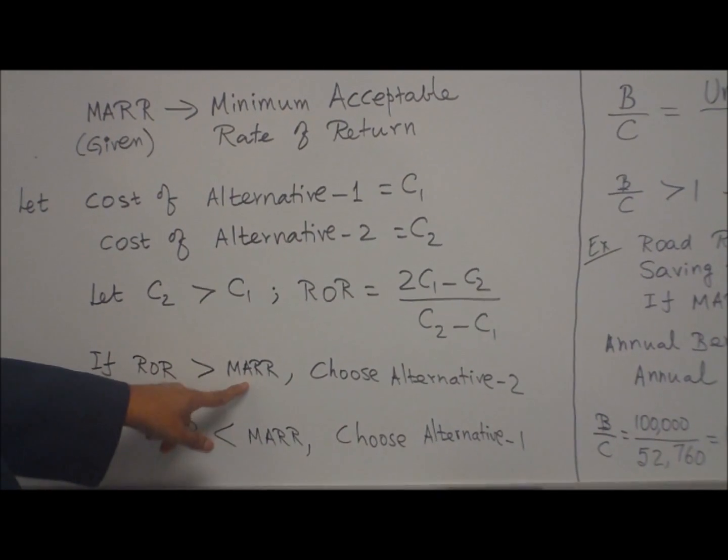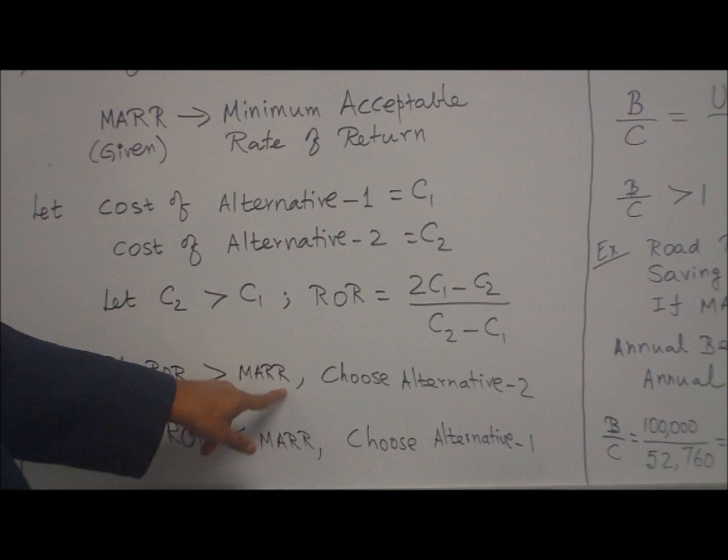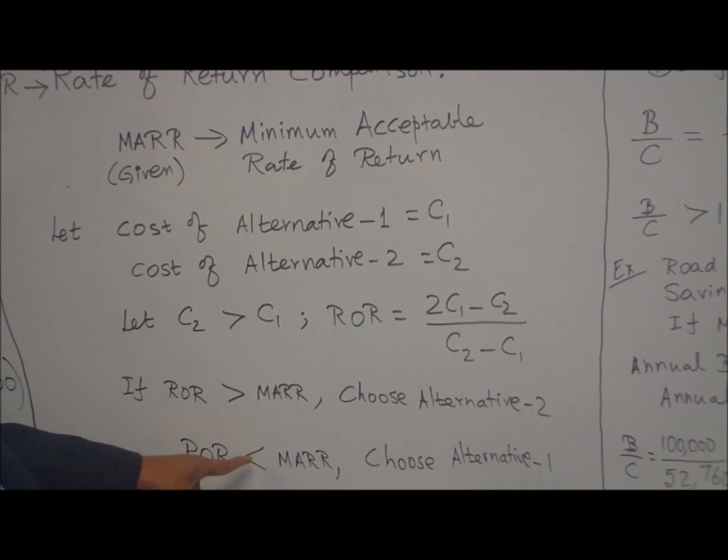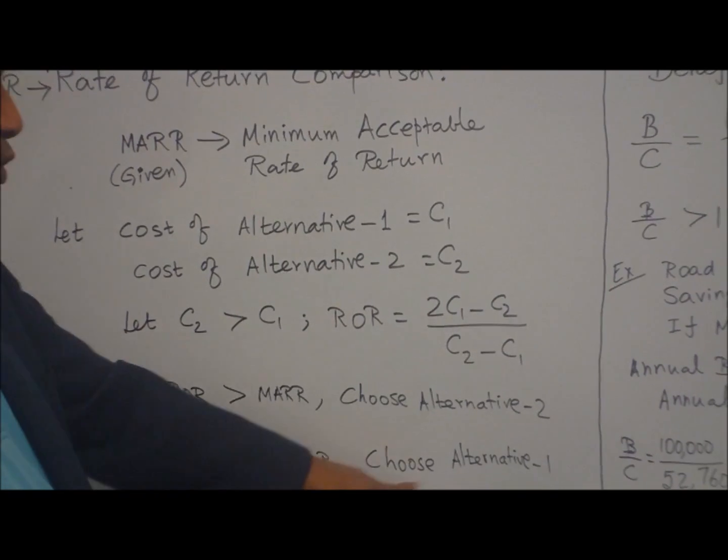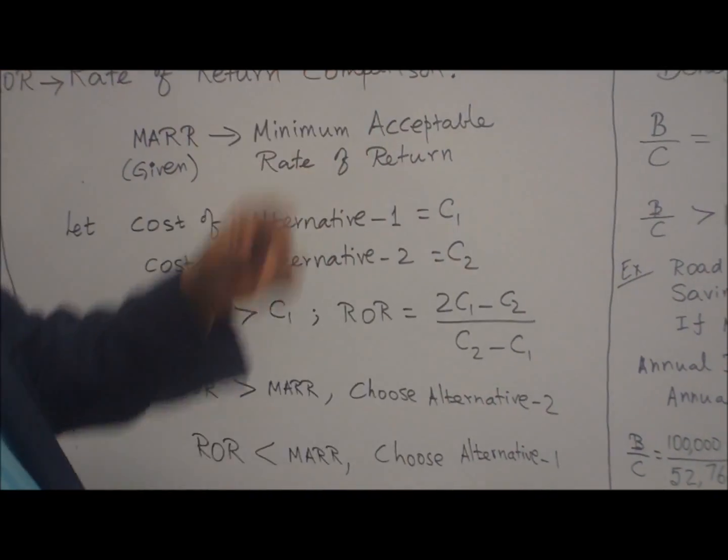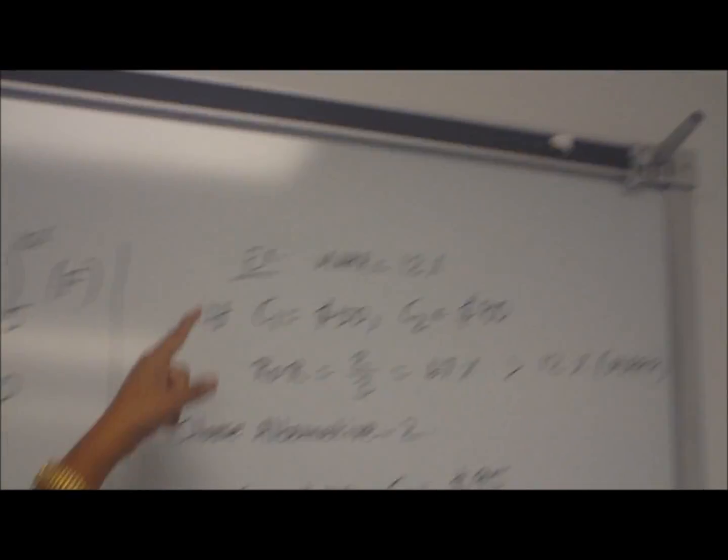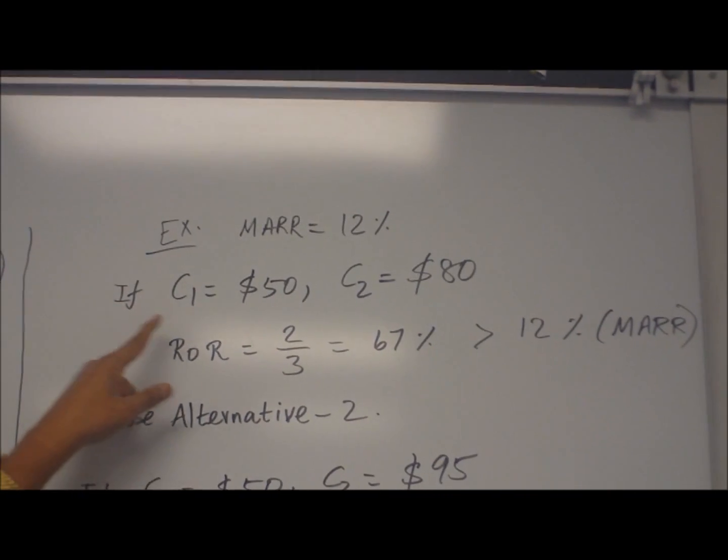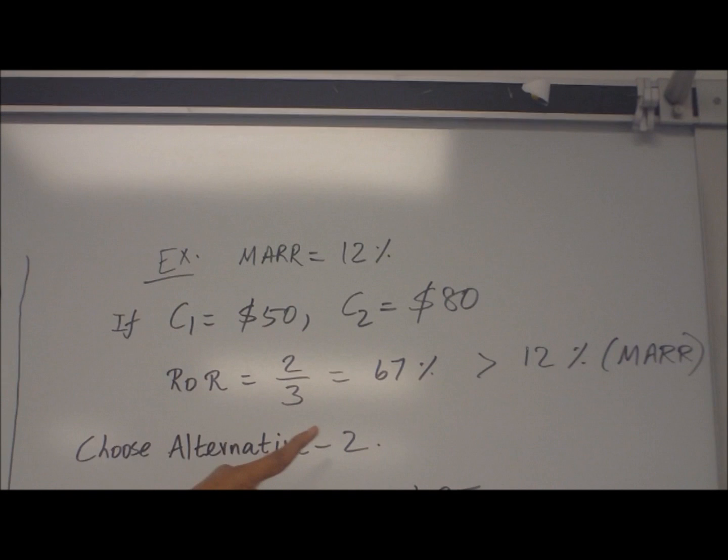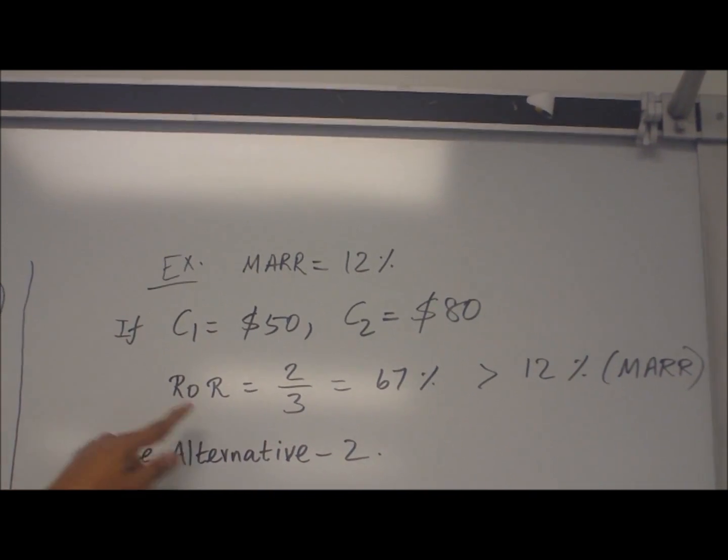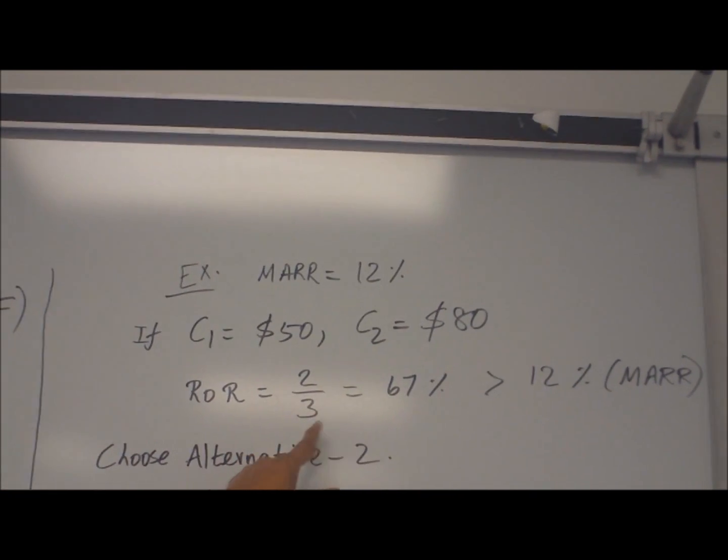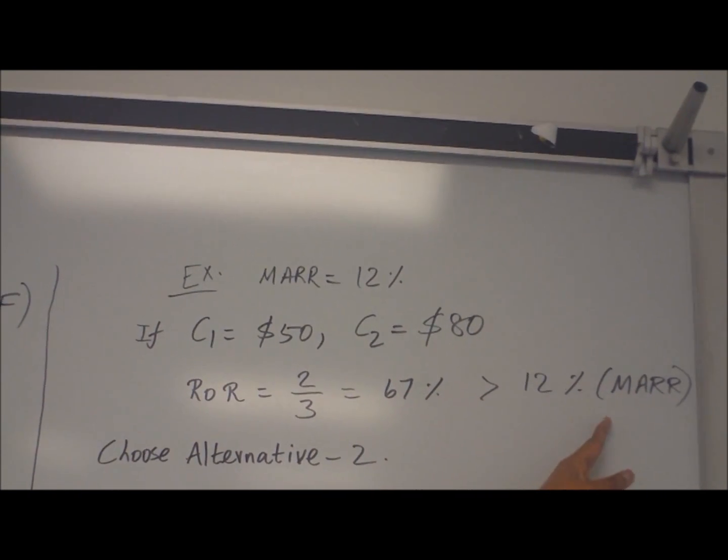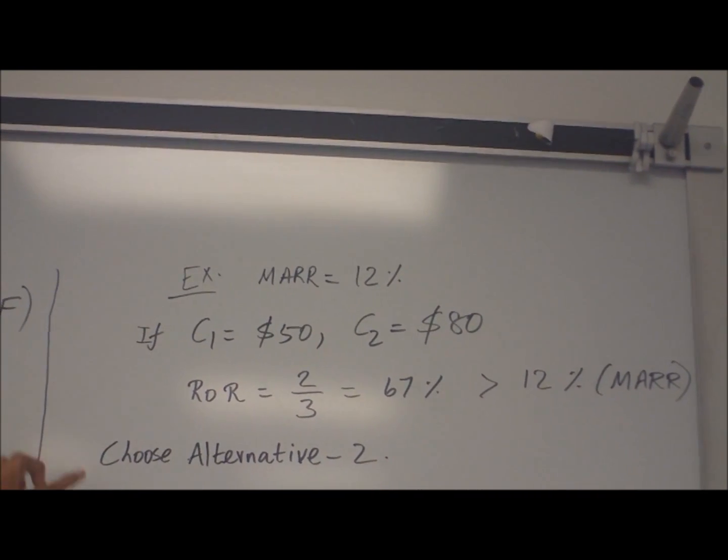If this rate of return, the calculated one, is greater than the minimum acceptable rate of return which is given, then choose alternative 2. If it is less than MARR, choose alternative 1. Let us see an example. If MARR is given by 12% in the problem, if C1 equals 50, C2 equals 80, then you can use that formula, find rate of return 2/3, which is 67%, which is greater than the 12% MARR. So choose alternative 2.